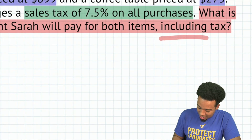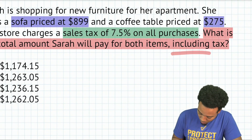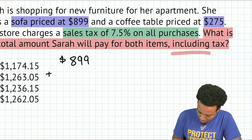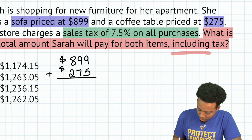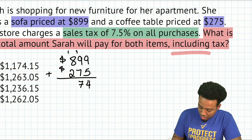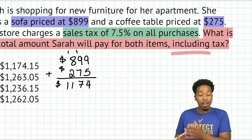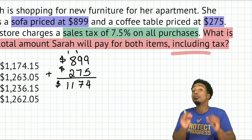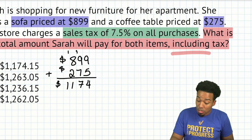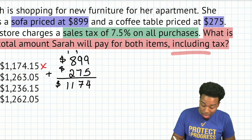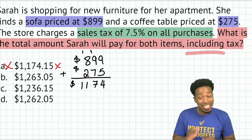So we'll calculate $899 plus $275. Adding those together: 9 plus 5 is 14, carry the 1; then 17, then 11 — so we have $1,174. But again, that's before we apply the tax, so don't get confused. The answer is not going to be A.